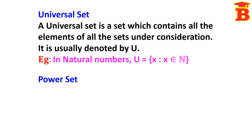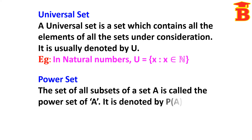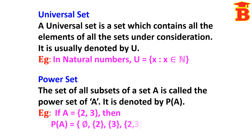Next, power set. The set of all subsets of A is called the power set of A, denoted by P(A). For example, if A = {2, 3}, then the subsets of {2, 3} are: null set, {2}, {3}, and {2, 3}. Taking all these subsets together gives the power set P(A).